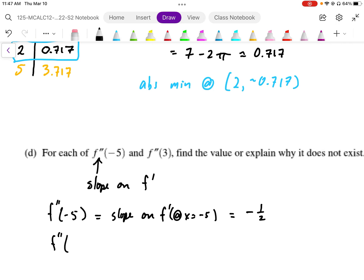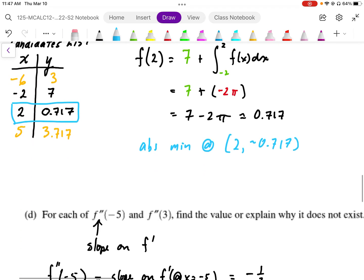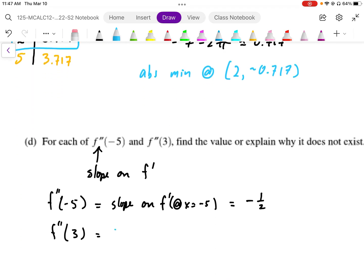The second derivative at x equals 3, this is again the slope on F prime. So when I take a look at the slope on F prime, that's a kink. That's a bend in the graph, so the slope cannot be defined at that point. So this doesn't exist because it's not smooth and continuous.